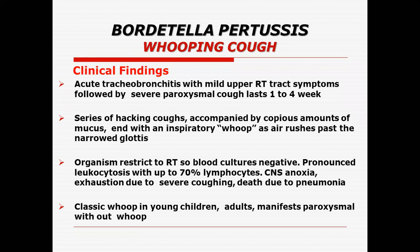The organism remains restricted to the respiratory tract. There is pronounced leukocytosis with 70% lymphocytes. Because of the lymphocytosis, the percentage of lymphocytes goes up to 70%, increasing the leukocyte count. There is central nervous system involvement, anoxia due to severe coughing, and death may occur in untreated individuals due to severe pneumonia.